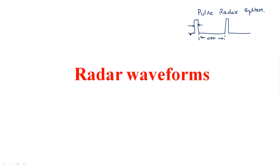The transmitting antenna transmits the signal pulse. When the pulse hits an object, the reflected signal travels back towards the radar system. The reflected echo signal is received by the radar during the off period. This is how the pulse waveform is used to detect objects. Let us understand this process through an animation.